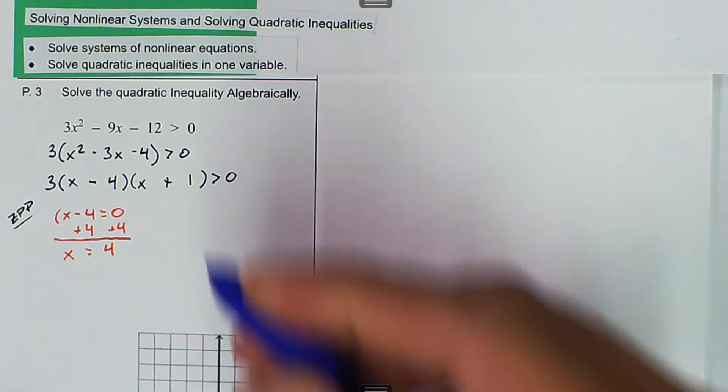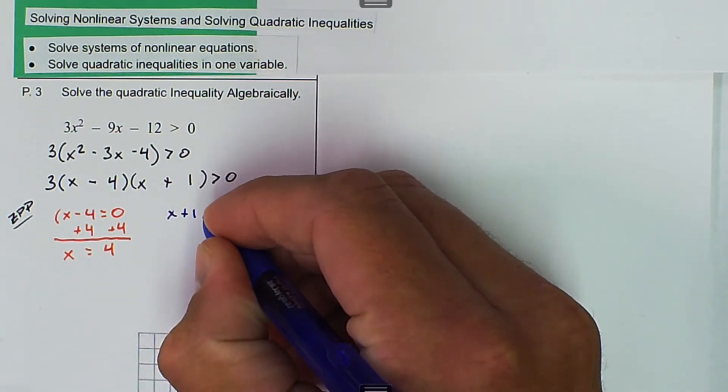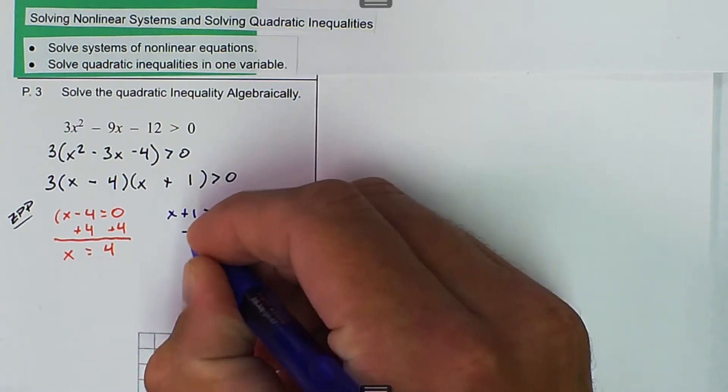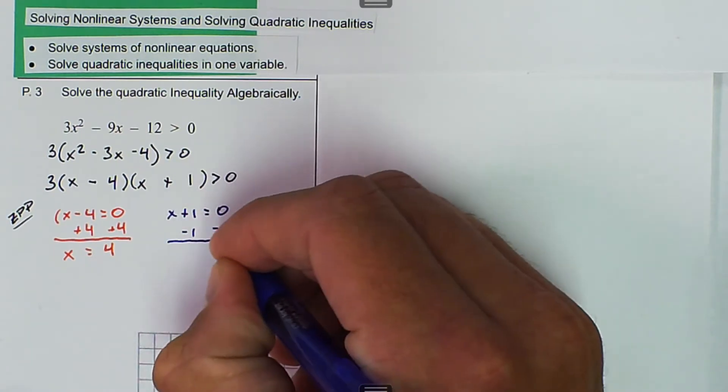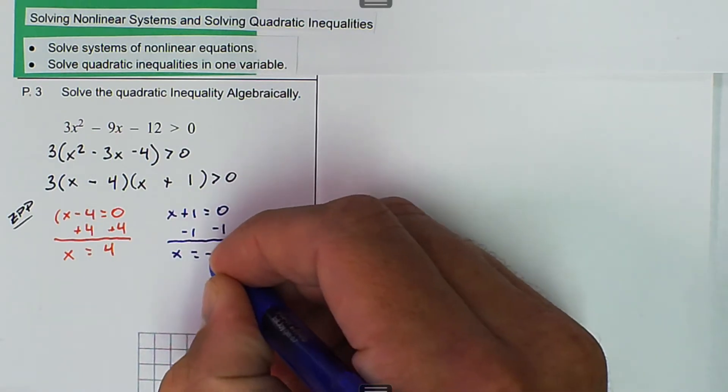And another one that we have, we have x plus 1. We're going to set that equal to 0, so we subtract 1 from both sides. And then we get x equals negative 1.